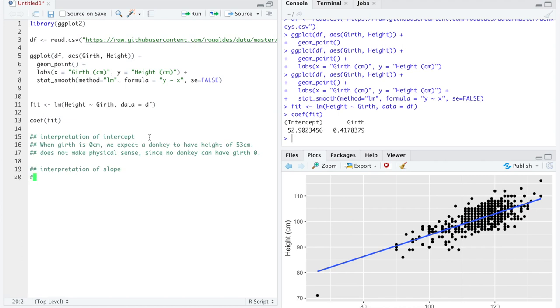So let's move on next to an interpretation of the slope. We would say for every one centimeter increase in girth, we expect height to increase by 0.42 centimeters. Now remember, that is a statement about the average donkey whose girth increases by one centimeter. This is not a statement about any particular donkey. This is a statement about the average donkey who theoretically grows one centimeter at girth. We expect such an average donkey's height to increase by 0.42 centimeters.